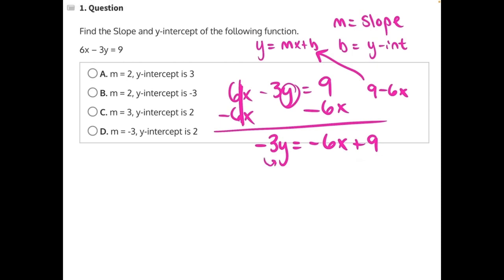Now, negative 3 is being multiplied to y, so we need to do the opposite and divide both sides by negative 3. And here we'll need to divide everything on the right side of the equal sign by 3 to keep everything balanced.